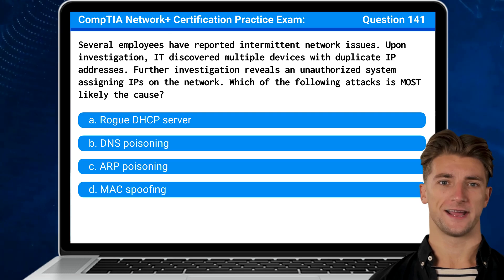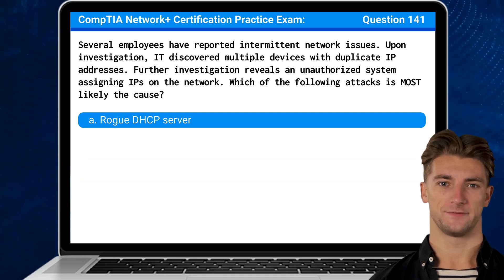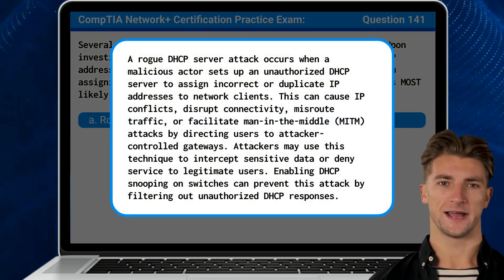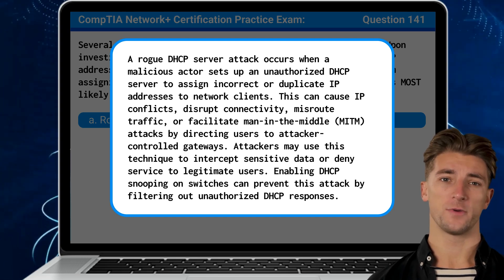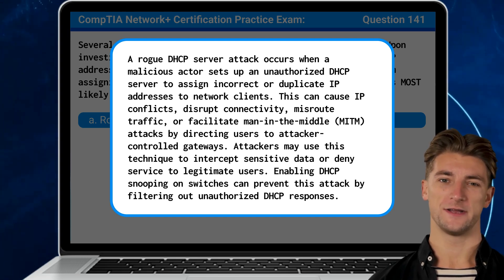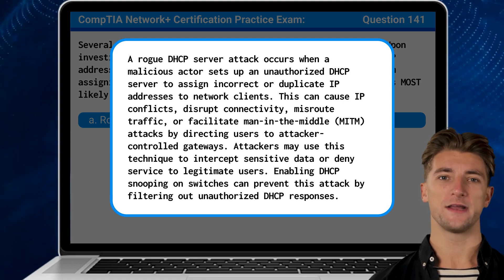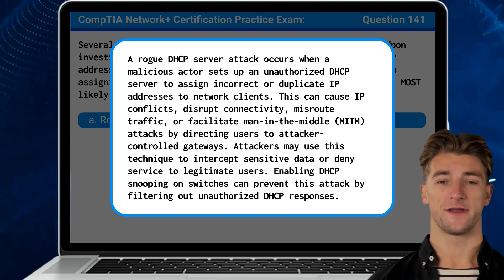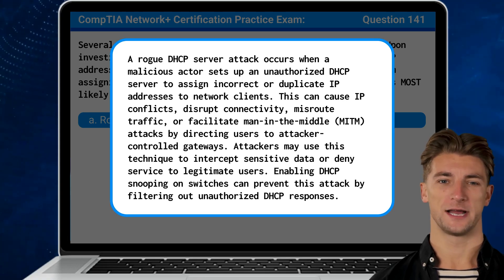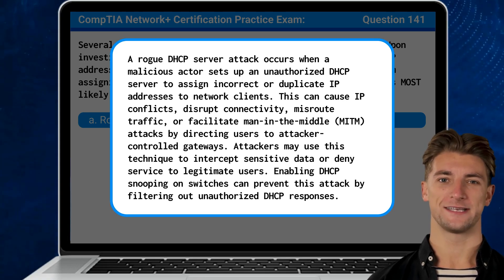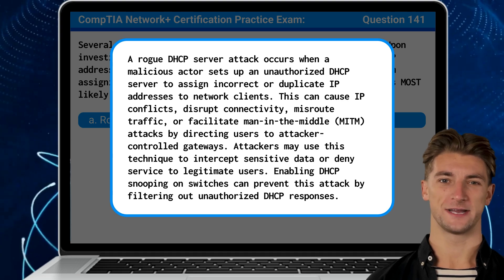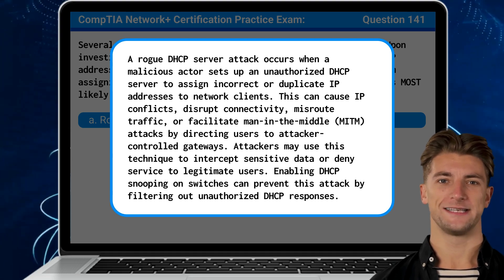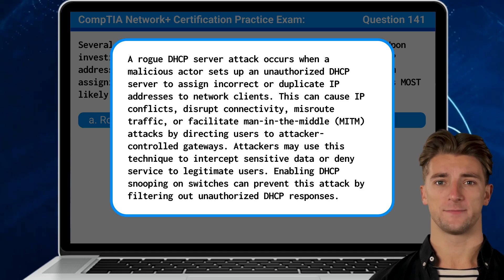The answer is A. Rogue DHCP Server. A Rogue DHCP Server attack occurs when a malicious actor sets up an unauthorized DHCP server to assign incorrect or duplicate IP addresses to network clients. This can cause IP conflicts, disrupt connectivity, misroute traffic, or facilitate man-in-the-middle attacks by directing users to attacker-controlled gateways. Attackers may use this technique to intercept sensitive data or deny service to legitimate users. Enabling DHCP snooping on switches can prevent this attack by filtering out unauthorized DHCP responses.